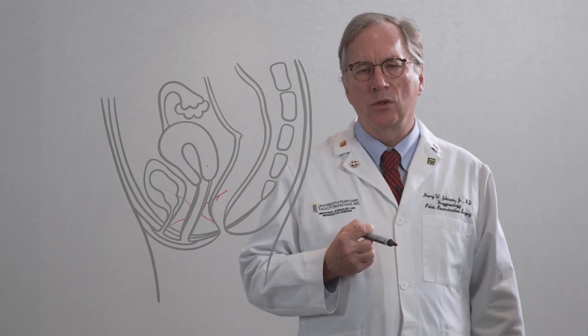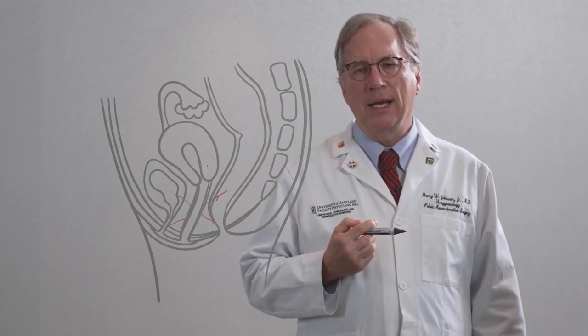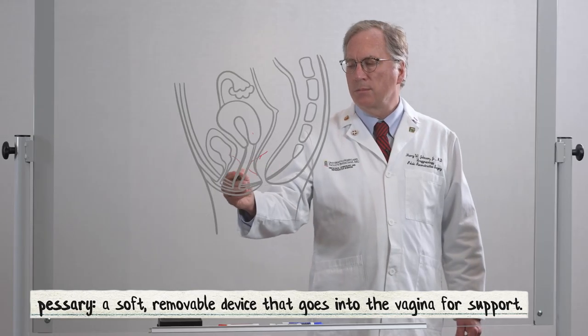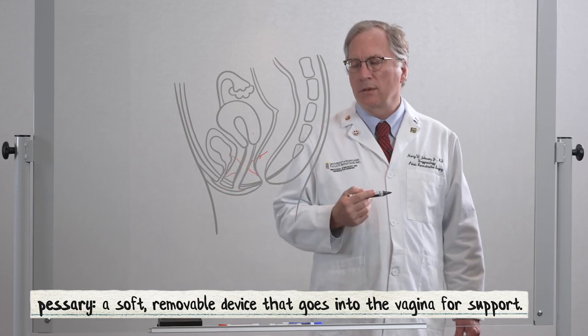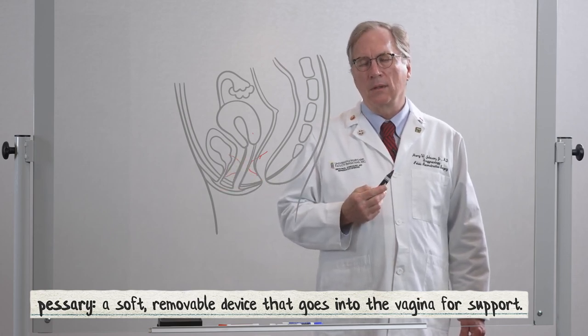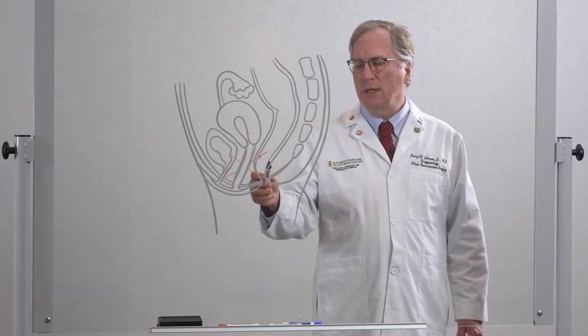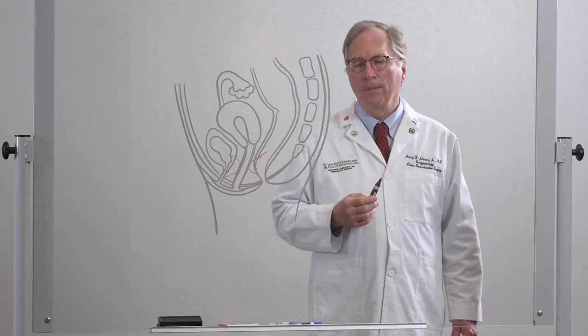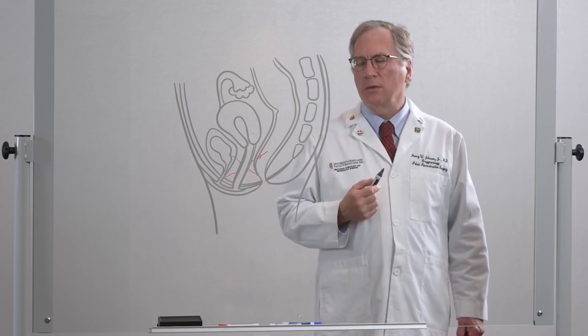When you talk about prolapse, there are several different treatments that you can do. There are non-surgical treatments which consist of a pessary that supports its place through the vagina and supports the pelvic floor, or pelvic floor exercises which strengthen the muscles of the pelvic floor. That's generally for milder forms of prolapse.